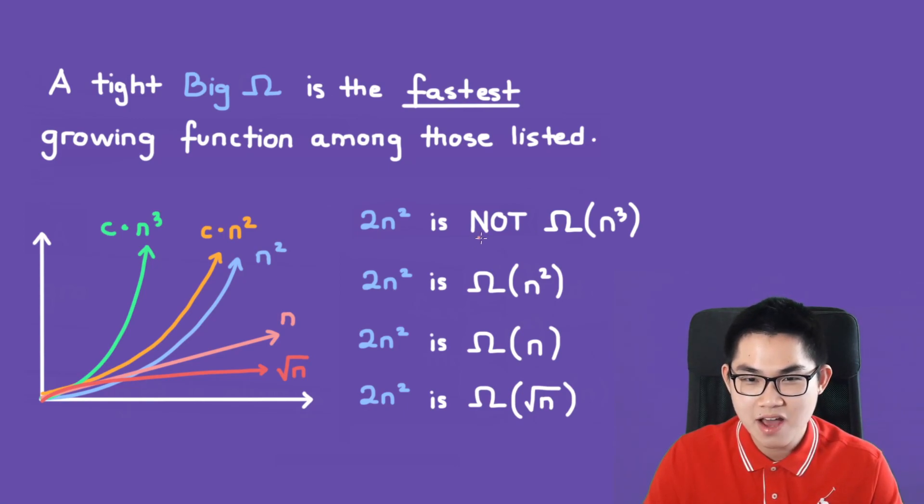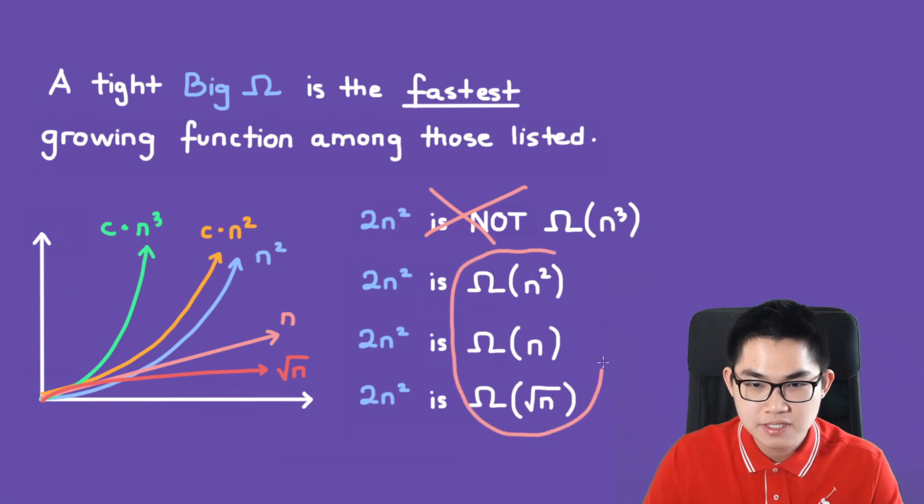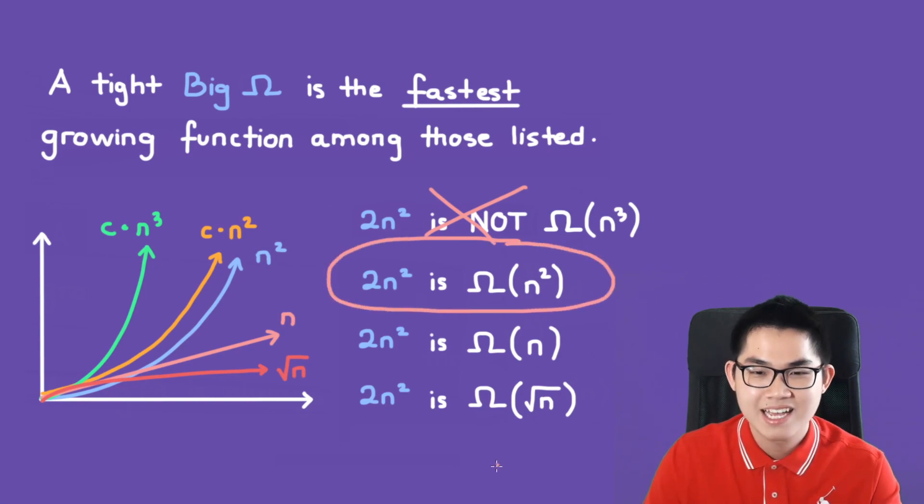Well, first of all, you see that this is not big omega, so you can safely ignore this one. Now, again, if you look at the definition, tight big omega is the fastest growing function among those listed. So out of these options, the fastest one is obviously this one. So we're going to select this one. And you can also notice that here we have n² and this is also n², so they're of the same order.